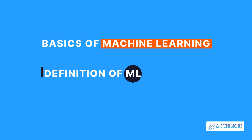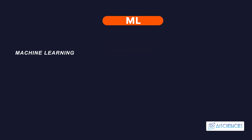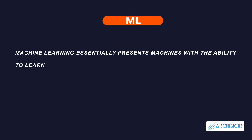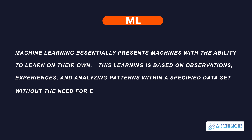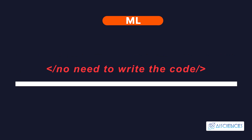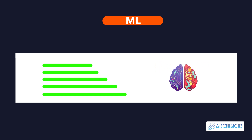Machine learning, or ML, is a subset of AI. Machine learning essentially presents machines with the ability to learn on their own. This learning is based on observations, experiences, and analyzing patterns with a specified dataset without the need for explicit programming. You don't need to write the code — you simply feed data to the generic algorithm, and the algorithm builds the logic based on the data you feed.